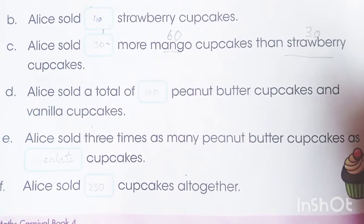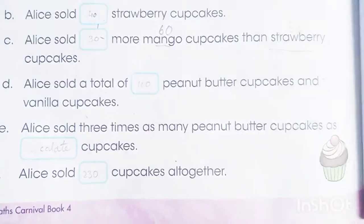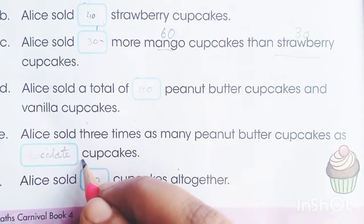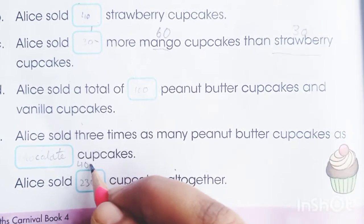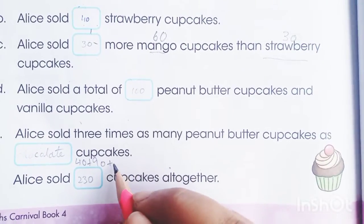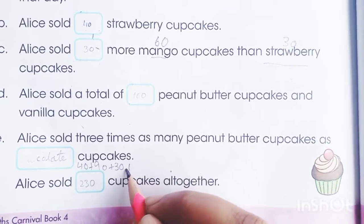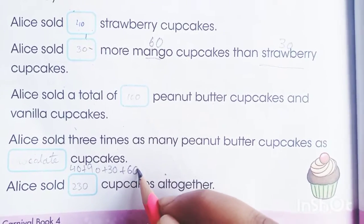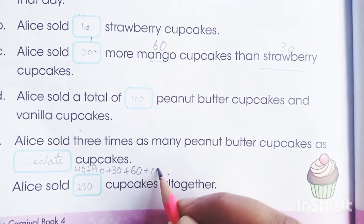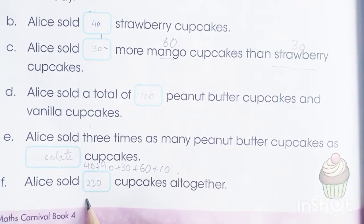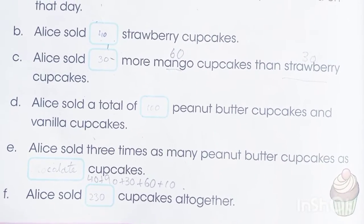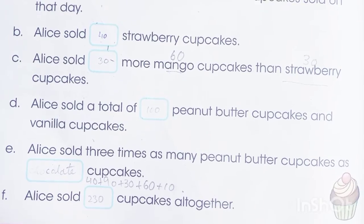All together, for all the flavors of cupcakes, we have taken the sum: 40 plus 90 plus 30 plus 60, and our last flavor vanilla was 10. We have taken the sum, so the answer is 230. Okay students, here is our lecture 2 — we have finished. Peace.